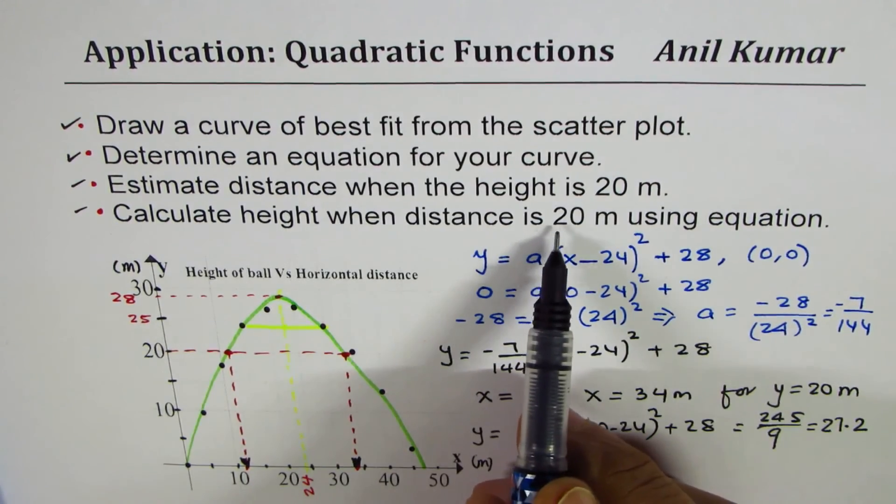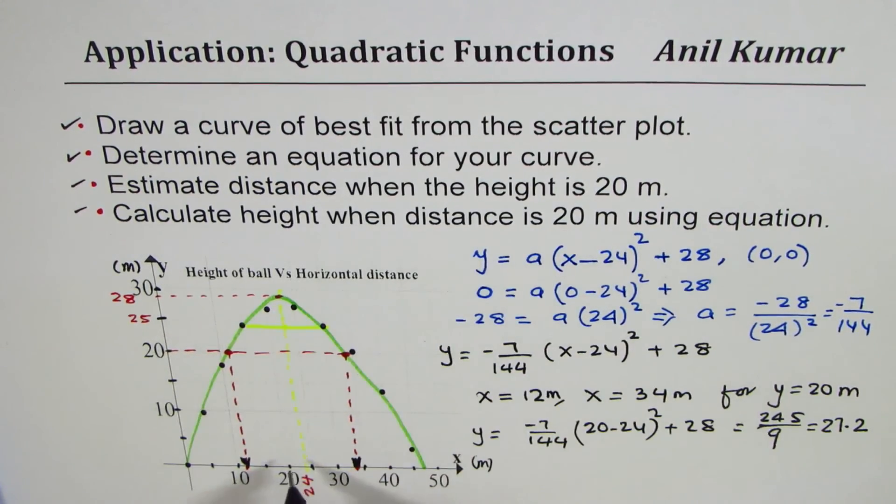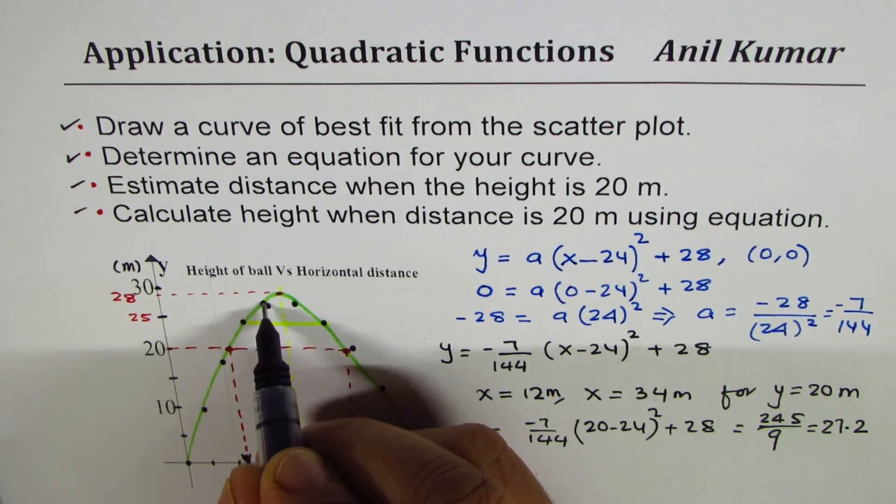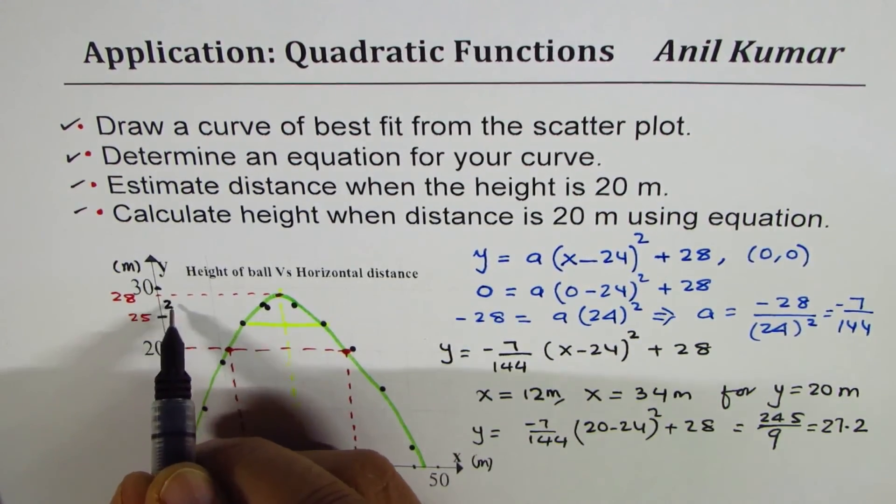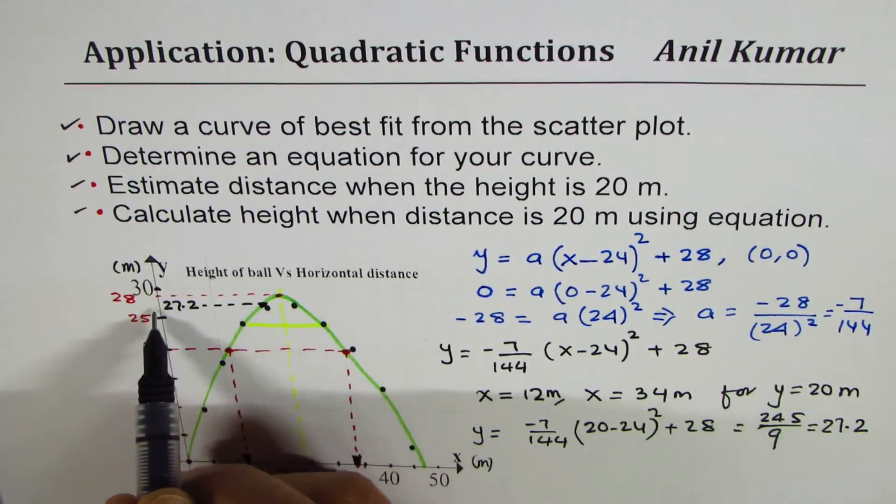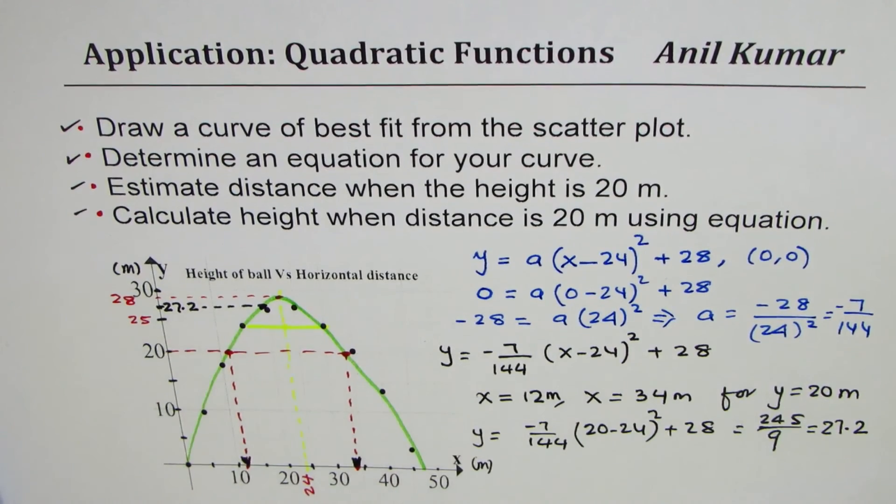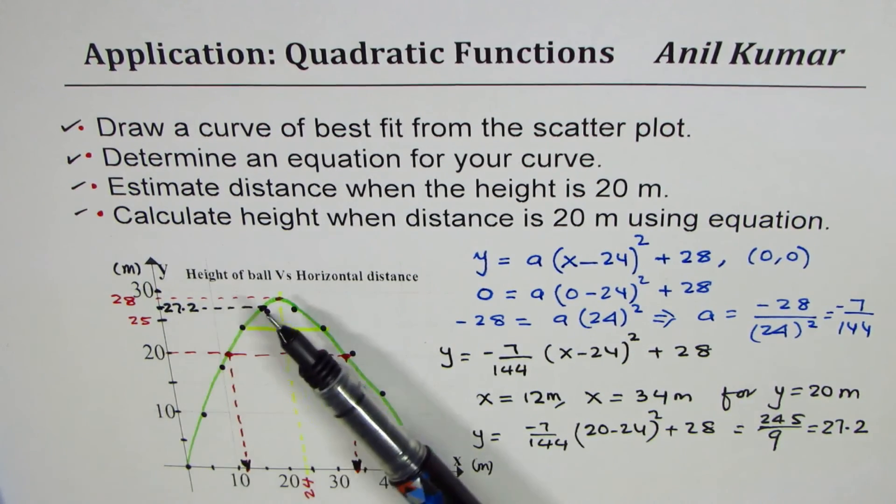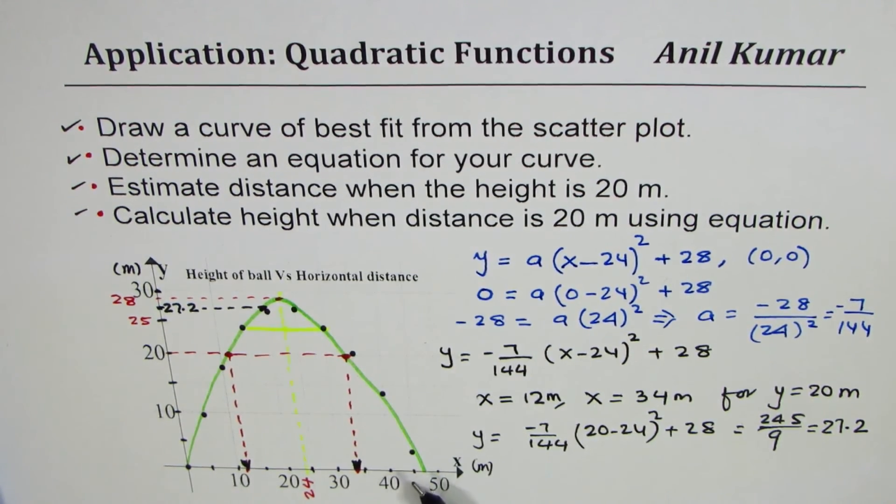So the distance of 20 which is approximately here for us seems to be 27.2. That is what we calculated. That is how you can actually use the given points. Normally you'll be given these points in the form of a table of data, from there you can plot the scatter plot and then do what I did.